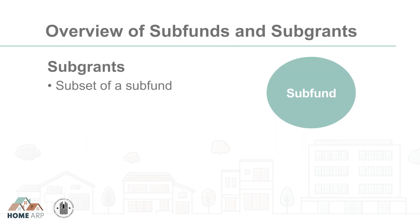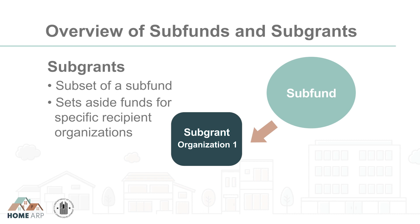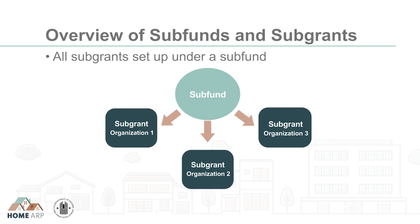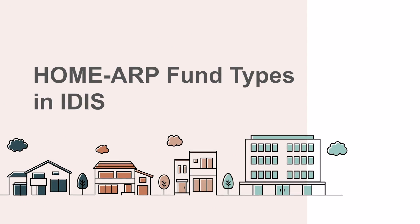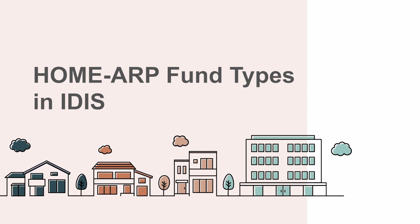A subgrant is a subset of a subfund. Subgrants are used to set aside funds within a subfund for a specific organization that will carry out a portion of the HomeARP award. All subgrants for a specific fund type should be set up under a single subfund. Before setting up or using subfunds or subgrants, it's important to know the different HomeARP fund types that are available in IDIS.